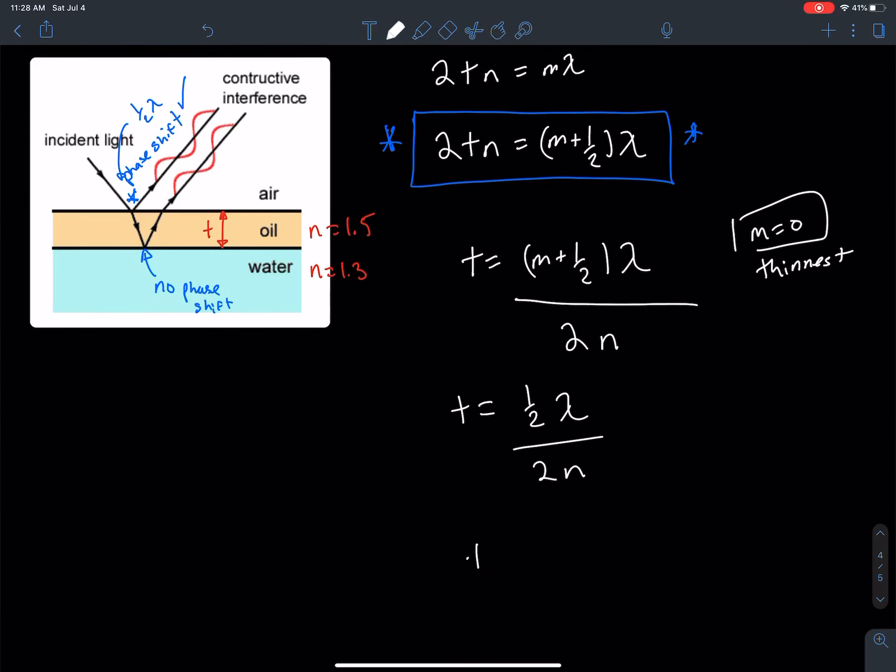The thickness is going to be equal to lambda divided by 4n. That's an important relationship to know. You can speed these problems up if you've practiced enough. The thickness of that oil under this condition would be the wavelength divided by four times n. That's a quick thing to do if you've practiced enough of these problems.